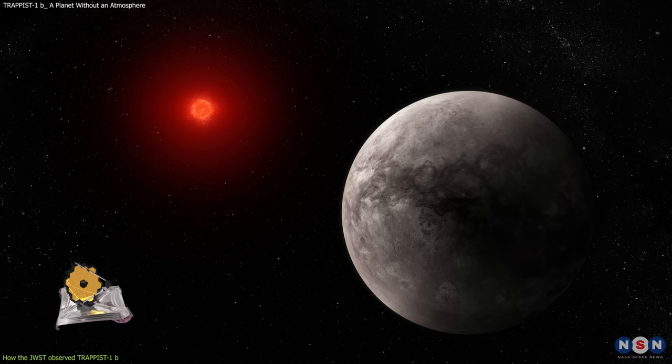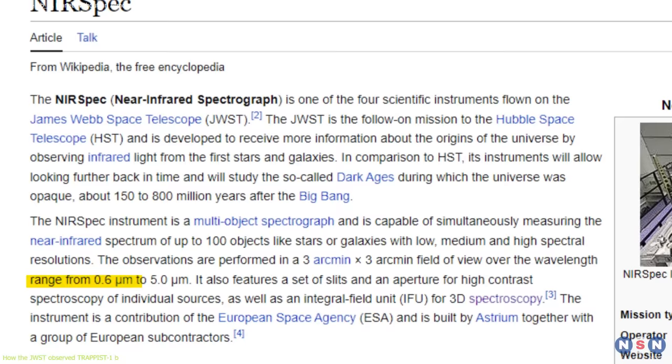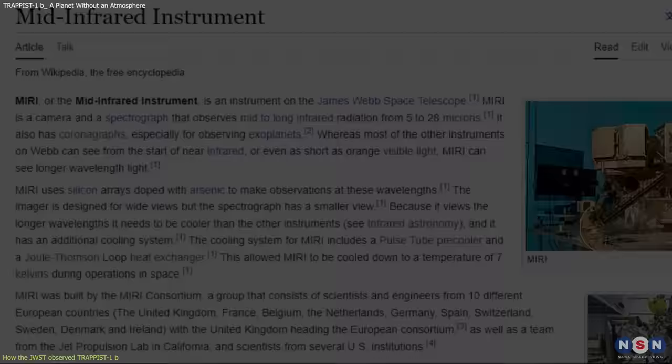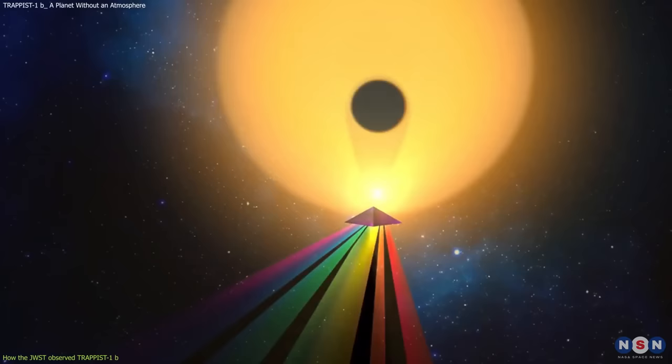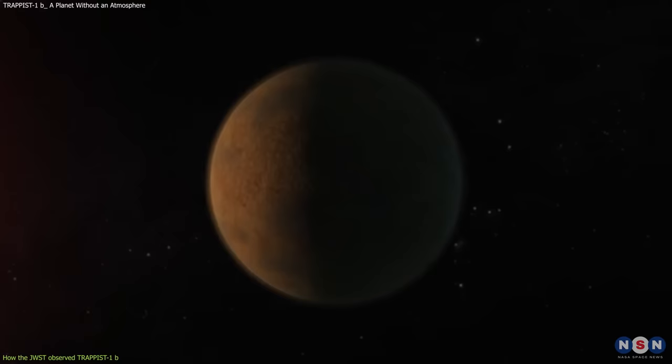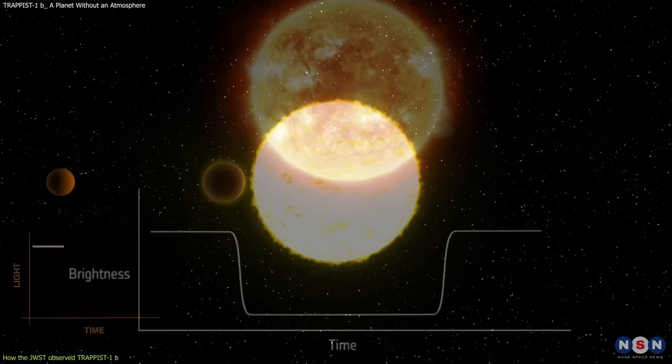The new study used Webb to observe TRAPPIST-1b in transit spectroscopy mode using two instruments: NIRSPEC and MIRI. NIRSPEC stands for near-infrared spectrograph, which covers wavelengths from 0.6 to 5 microns. MIRI stands for mid-infrared instrument, which covers wavelengths from 5 to 28 microns. Together, these instruments provide a wide range of infrared coverage that can capture many atmospheric signatures. The study observed four transits of TRAPPIST-1b with NIRSPEC and two transits with MIRI, collecting more than 20 hours of data. Then they processed and analyzed the data to extract the spectrum of TRAPPIST-1b's atmosphere.